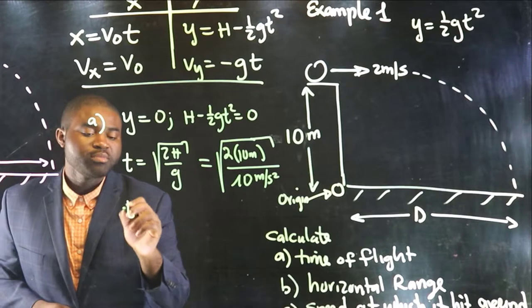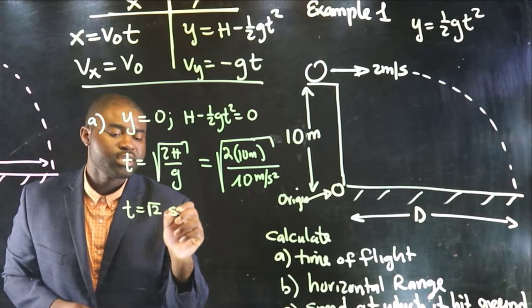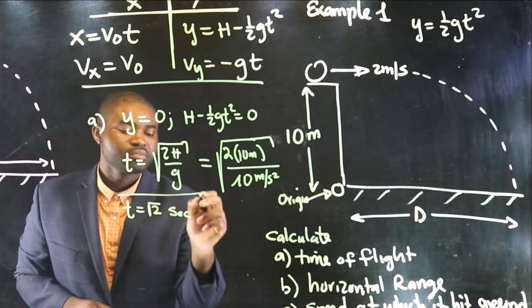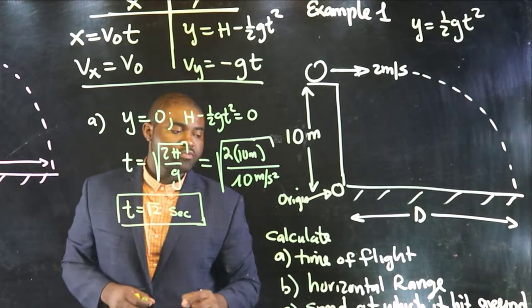So, t here, the time of flight, is just the square root of 2 seconds. So, this is the time of flight.